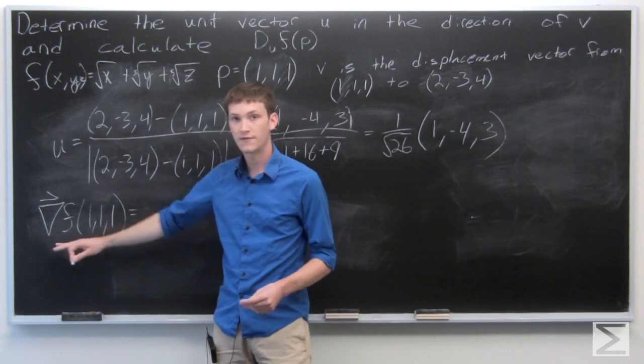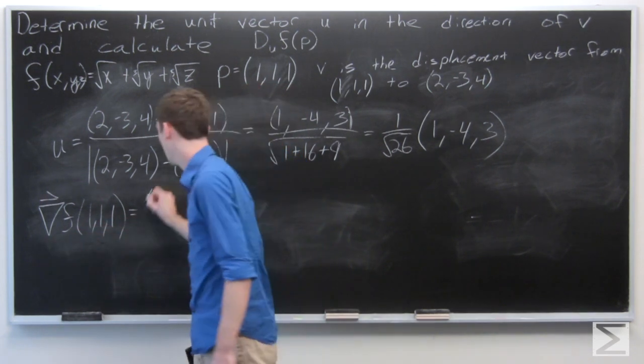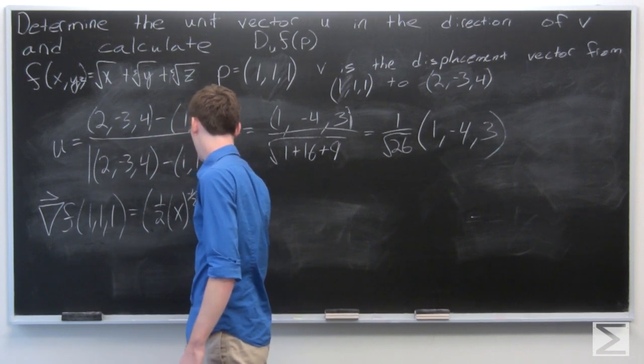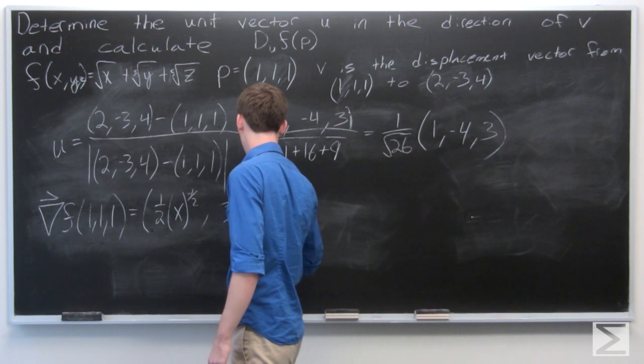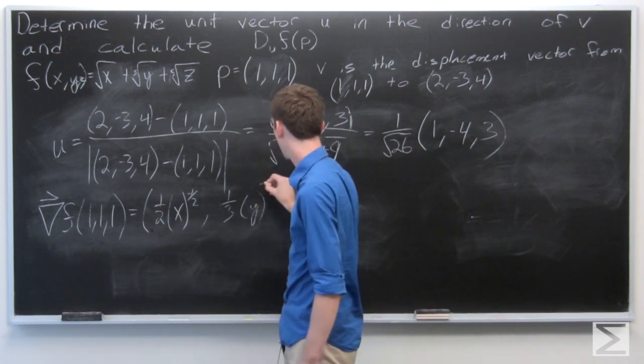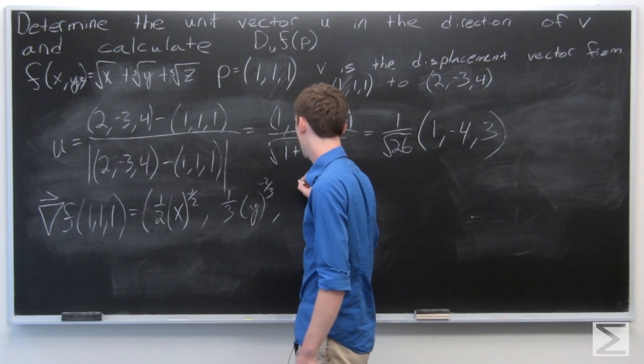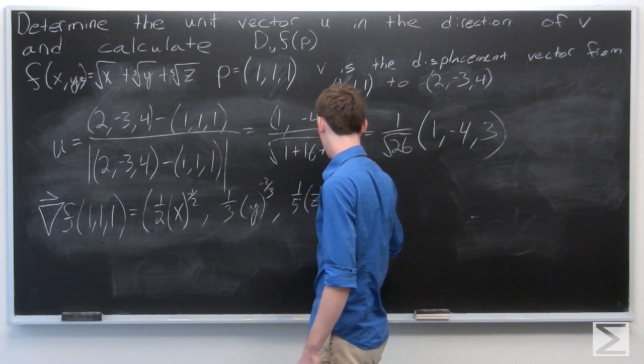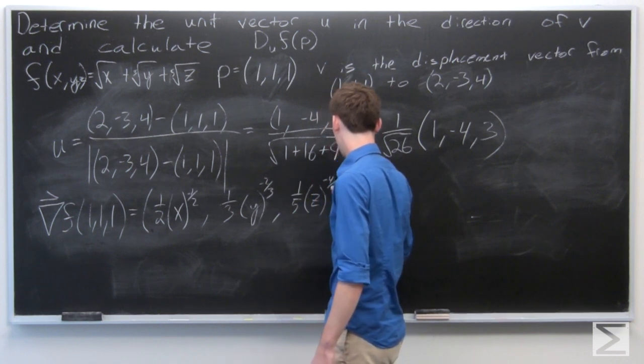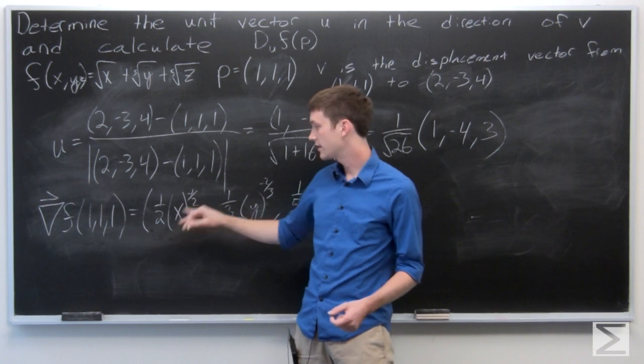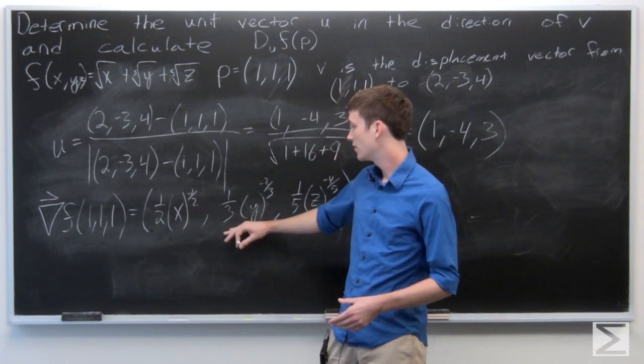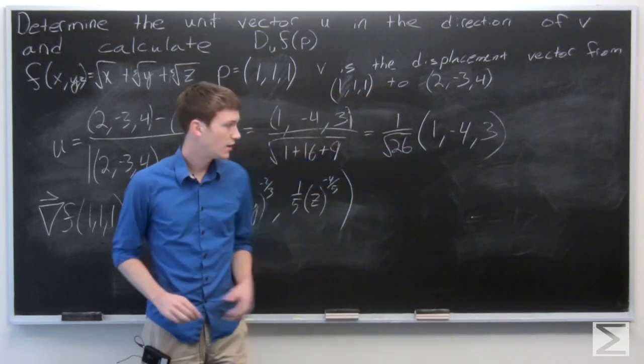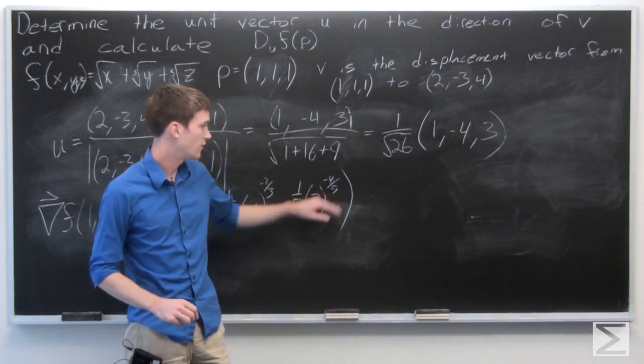So the gradient vector of f is going to be ½ times x to the negative ½, ⅓ y to the negative ⅔, and ⅕ z to the negative ⅘.